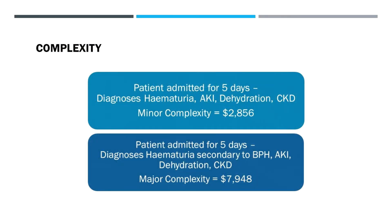A patient admitted for five days with hematuria, AKI, dehydration, and CKD — here we've added the hematuria and qualified why it is: hematuria associated with BPH. That increases the complexity significantly, from almost $3,000 to almost $8,000, which is a big difference.